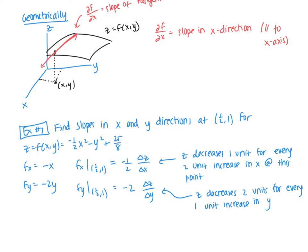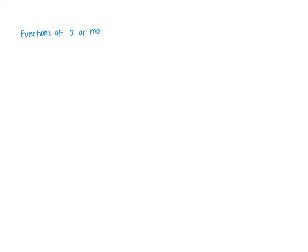So that is partial derivatives and what they mean. For functions of three or more variables, it's a similar idea — there are three variables and you find the partial with respect to one while holding the other two constant. Same idea.